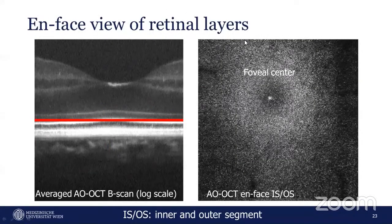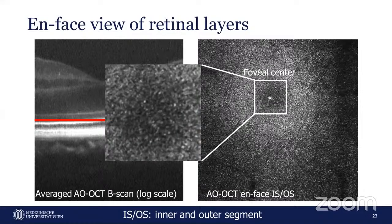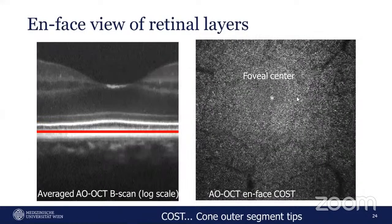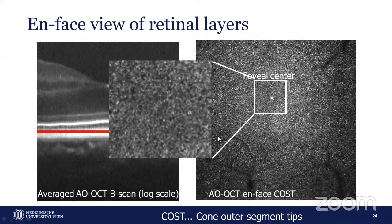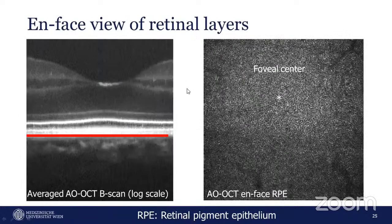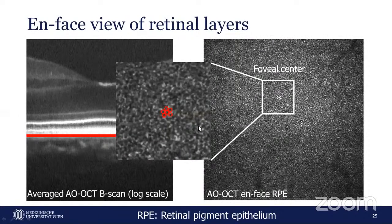Showing individual layers: the ISOS layer shows photoreceptors nicely resolved in the periphery of the fovea. Zooming into the fovea, photoreceptors are also visible there. The COST layer similarly shows photoreceptors, partially resolved at the fovea but clearly resolved at the periphery. In the RPE layer, RPE cells are nicely visible at the fovea — some cells are circled for clarity.